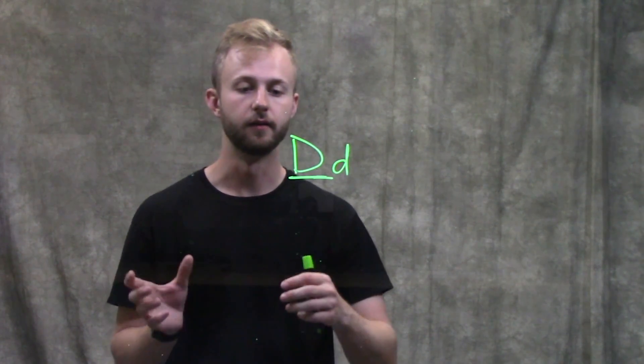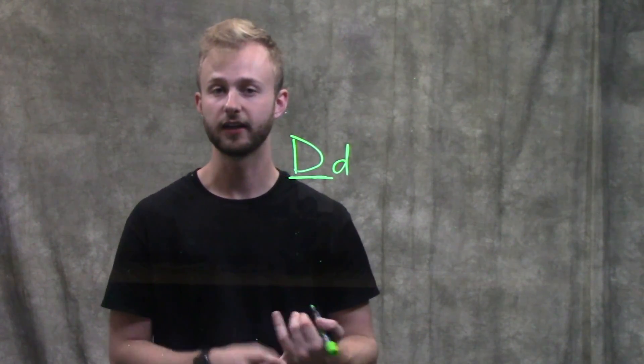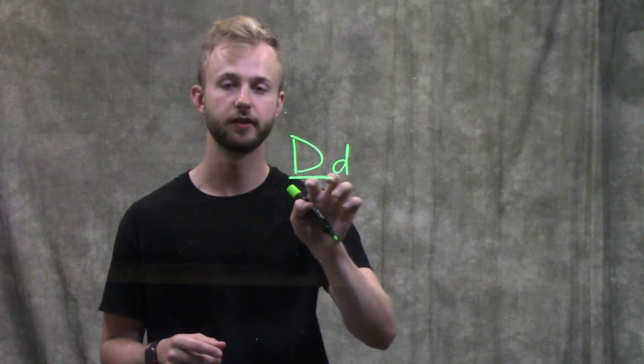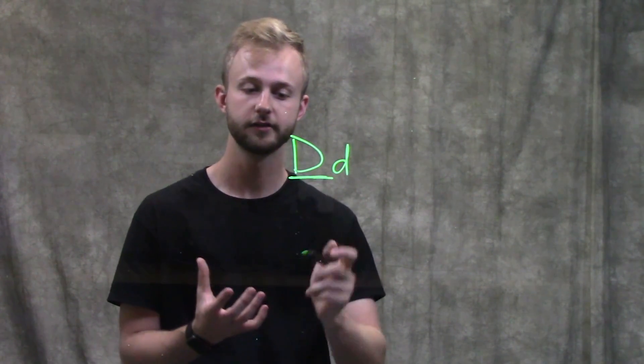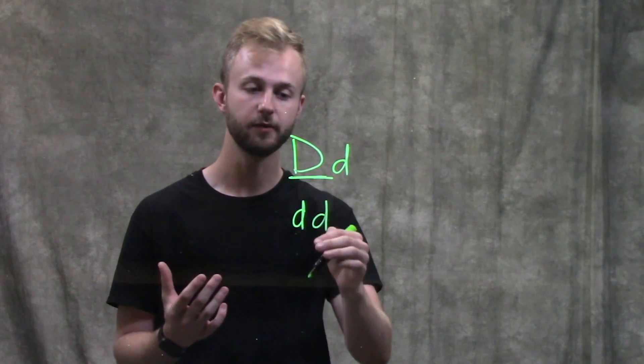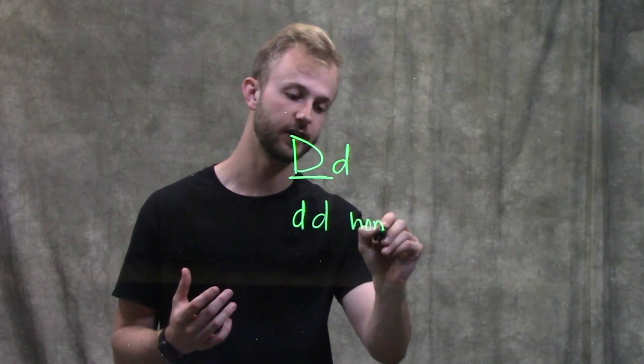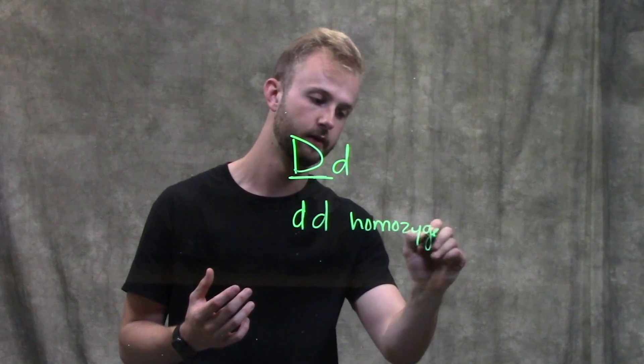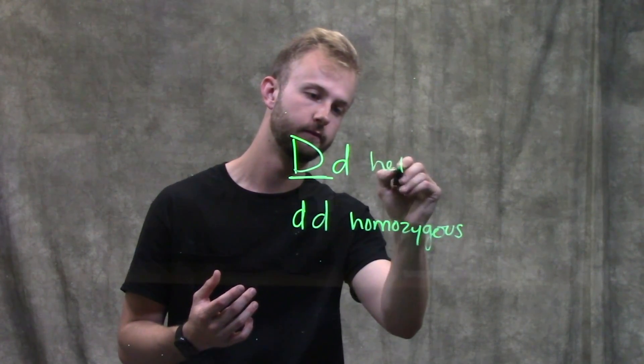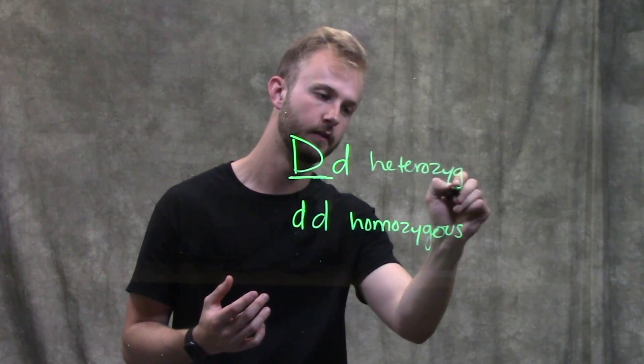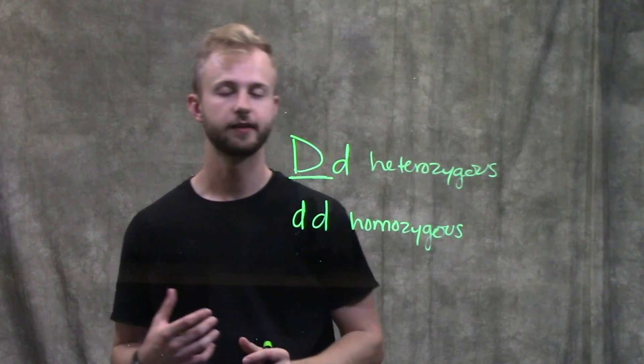Heterozygous means we have two different alleles at one locus, whereas if we have two of the same alleles, this would be homozygous.